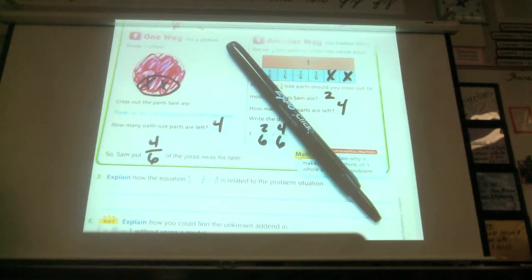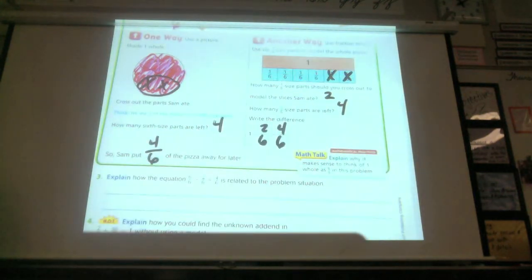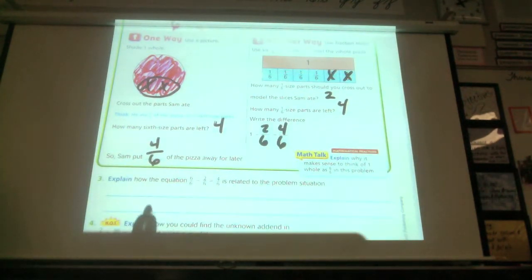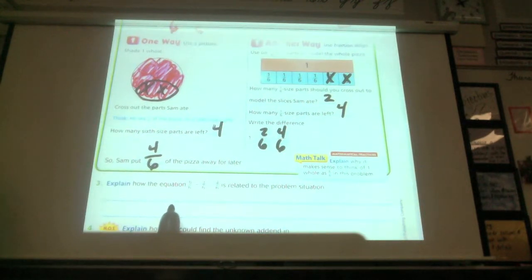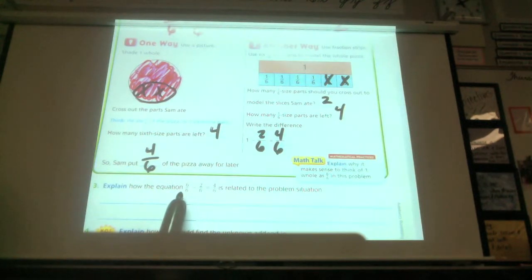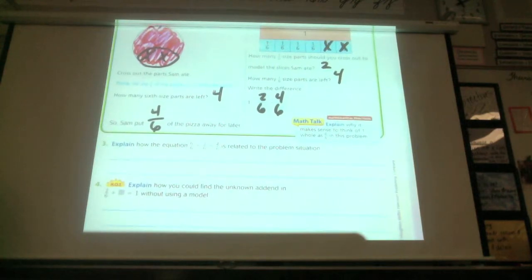Who would like to share their definition? This is kind of a tricky one, but I'm looking for someone. Ooh, Malia's being brave. Okay, Malia, why don't you explain? All right, she said that it's related because you can take the one whole and change it to six-sixths because you might as well change it to have the same denominator as the rest of the problem. And that's what we did in this case. Six-sixths minus two-sixths equals four-sixths. All right, number four.